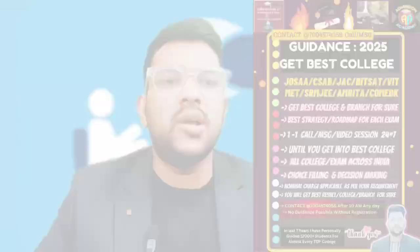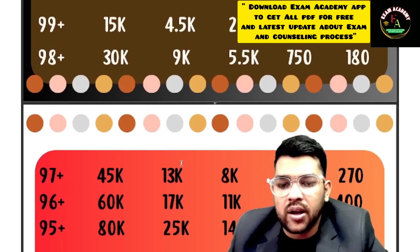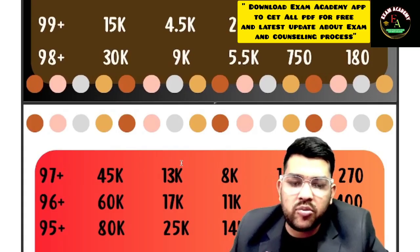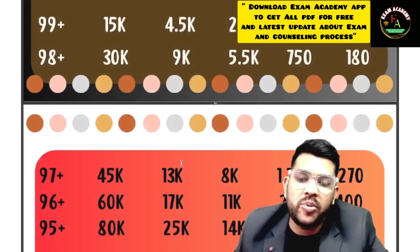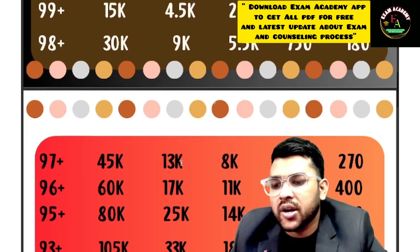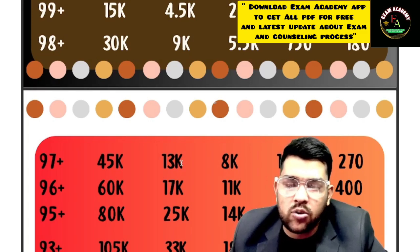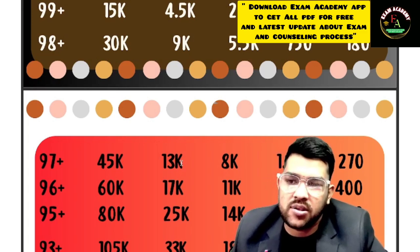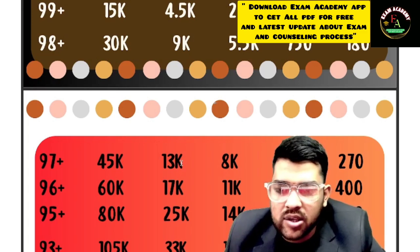For 97 percentile — General: 45,000, OBC: 13,000, EWS: 11,000, SC: 1,100, ST: 270. For 96 percentile — General: 60,000, OBC: 17,000, EWS: 11,000, SC: 2,000, ST: 400.